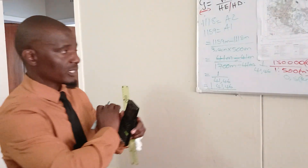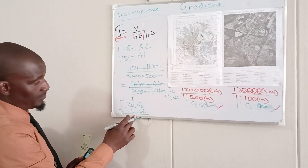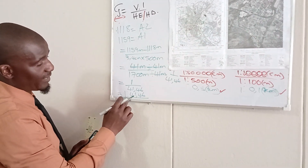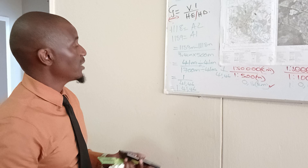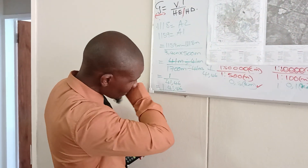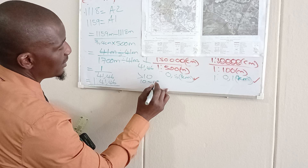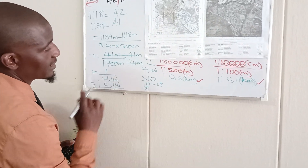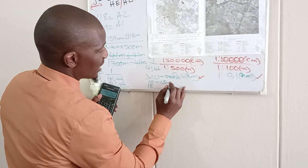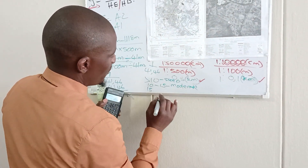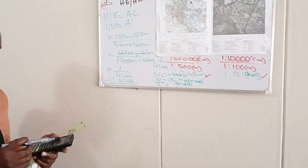This is your answer. You don't write any unit of measurement — this is the relationship between your horizontal equivalent and your distance. For every ascent of 1 centimeter, you move a horizontal distance of 41.46 meters. When interpreting your gradient: if it's less than 10, it is steep; if it's between 10 to 15, it is moderate; and if it's more than 15, it is gentle.